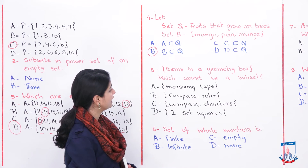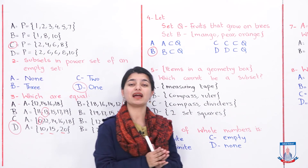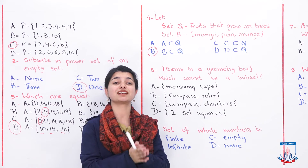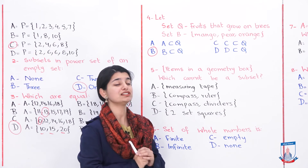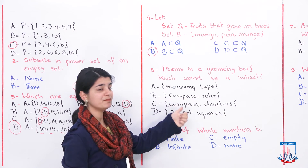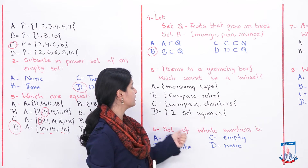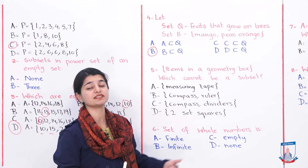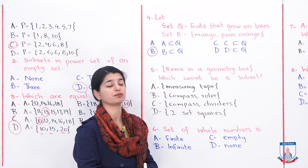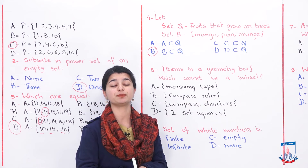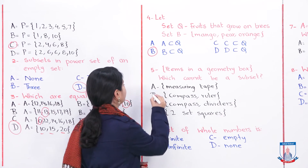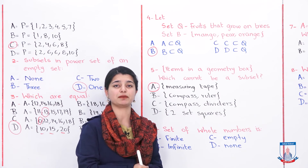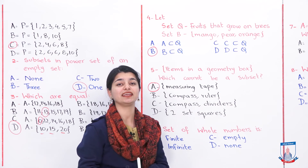The next MCQ is about the set of items in a geometry box — what cannot be a subset? Options are: A) measuring tape, B) compass or ruler, C) compass or dividers, D) two set squares. A proper maths geometry box contains a divider, compass, set squares, and ruler. The one item not present is a measuring tape. Therefore option A — measuring tape — cannot be a subset of the geometry box set.